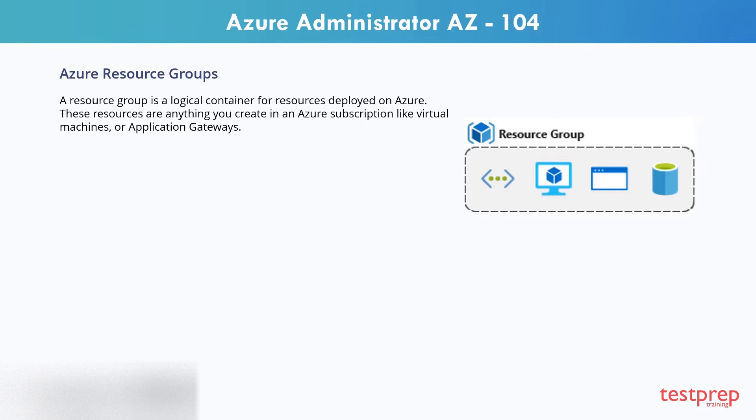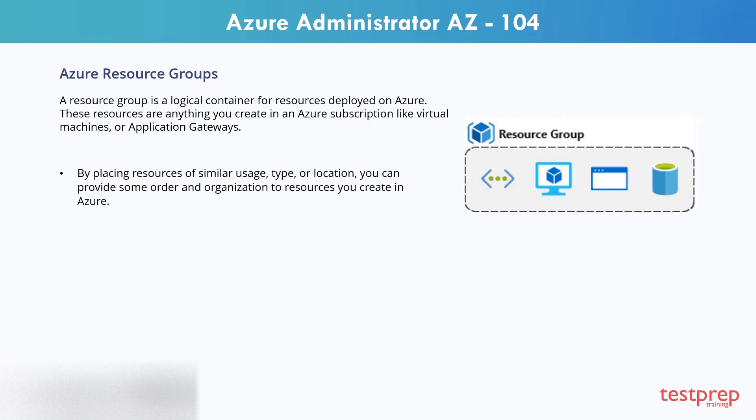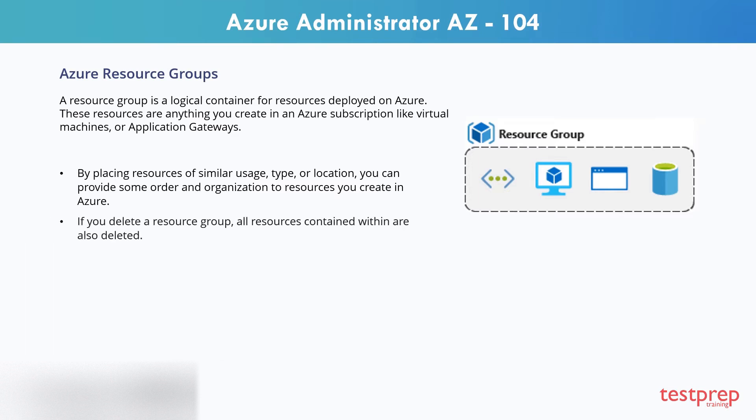A resource can only be a member of a single resource group. Many resources can be moved between resource groups, with some services having specific limitations or requirements to move. Resource groups can't be nested. By placing resources of similar usage, type, or location, you can provide some order and organization to resources you create in Azure.